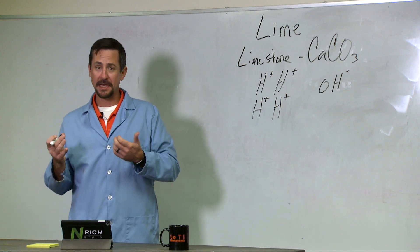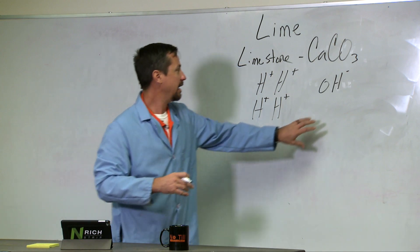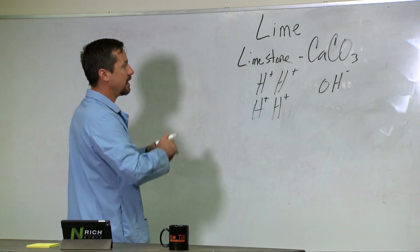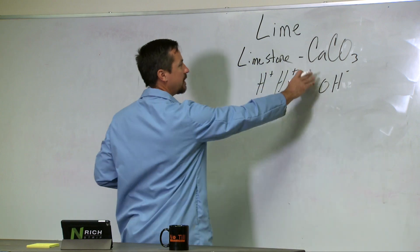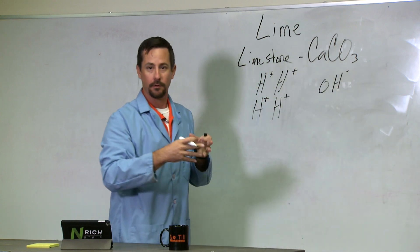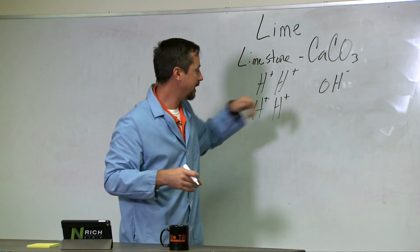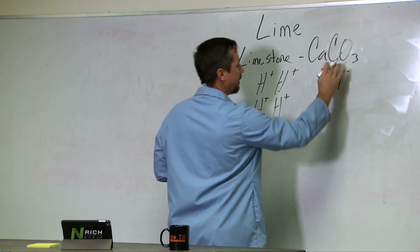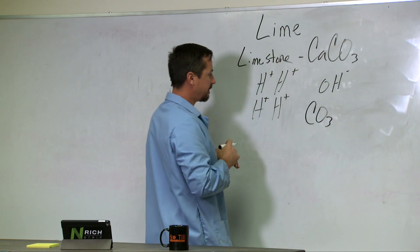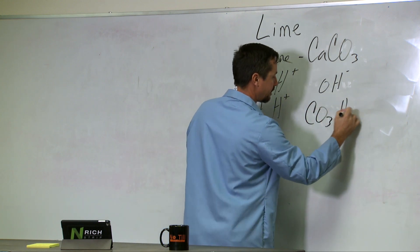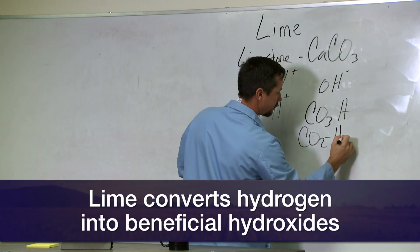To raise soil pH, we want to take some of these hydrogen and turn them into hydroxides. How we do that through limestone: we first put in this finely ground rock, finely ground limestone as calcium carbonate. The carbonate breaks off - CO3 splits off, grabs these hydrogens, and we have the evolution of CO2 and H2O.